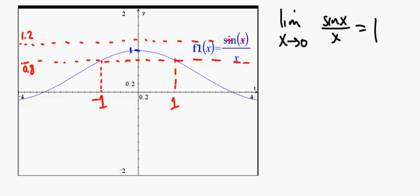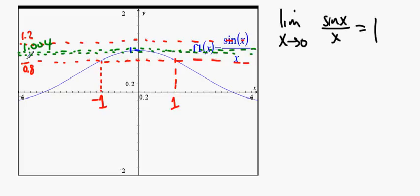0.2 is not very far away. What if I want to get really close? What if I let the difference from 1 be only 0.004 — that's as far as I'm willing to go. I want to get really, really close to 1. Is there an interval of x values centered at 0 that traps the function within the green band? The answer is yes. If I stay between negative 0.15 and 0.15, then the function would be inside the green band.